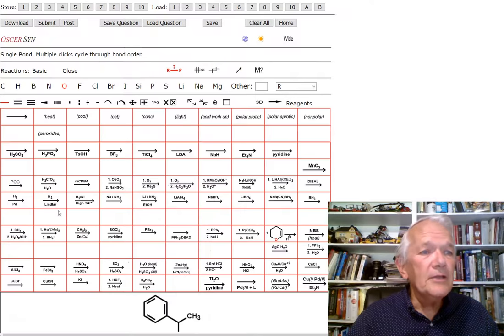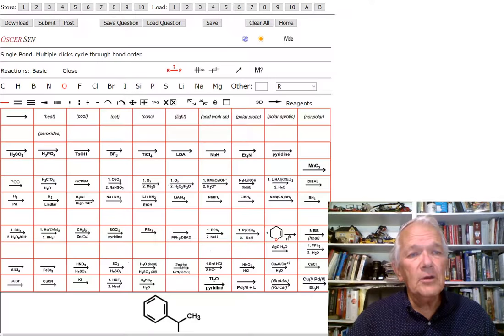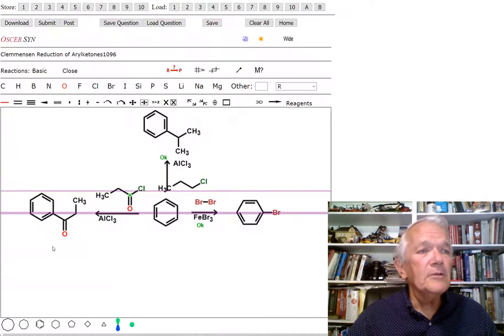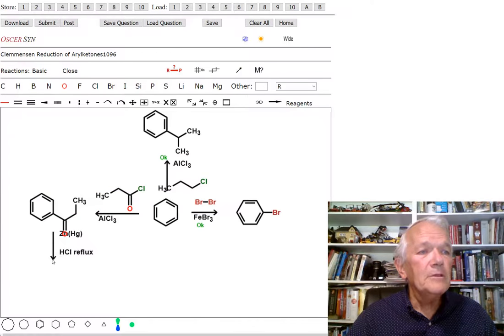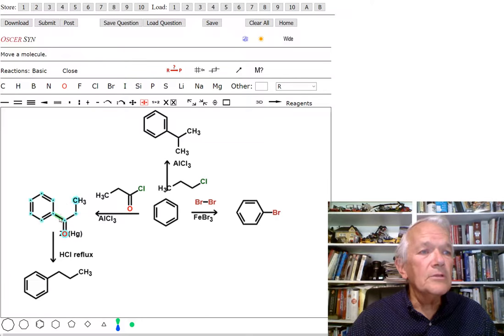So Oscar has a couple reducing agents. You could either use the Clemmensen reduction, which is the zinc mercury, this one down here. Or you could go up here on the menu and find the Wolff-Kishner. Let's use the zinc one. This is the Clemmensen, and so try that one, and we should get a reduction compound. Let me just move that a little bit so you can see the reagent a little bit better.